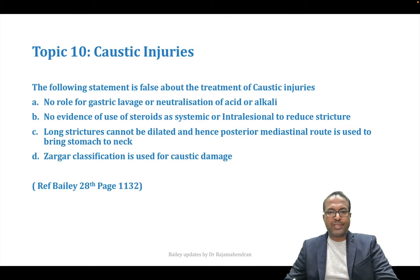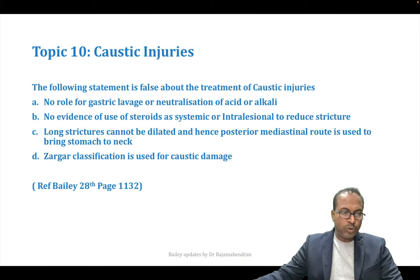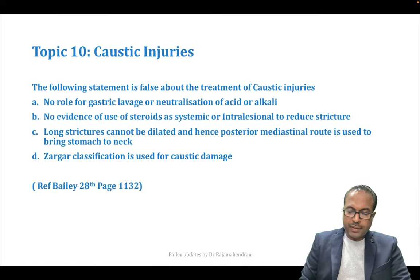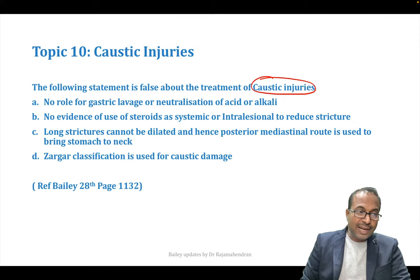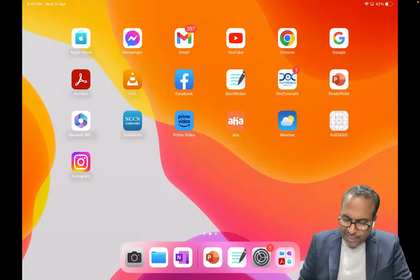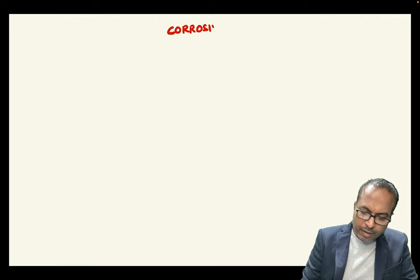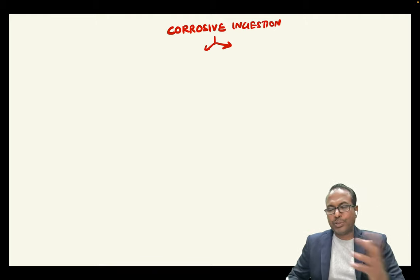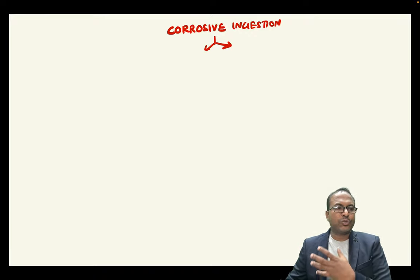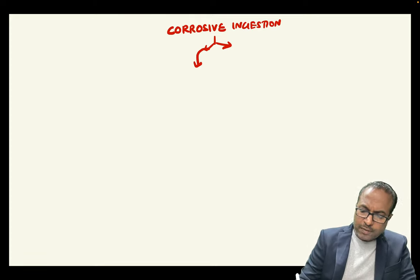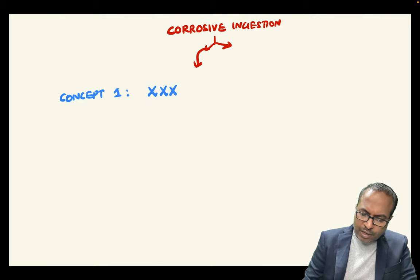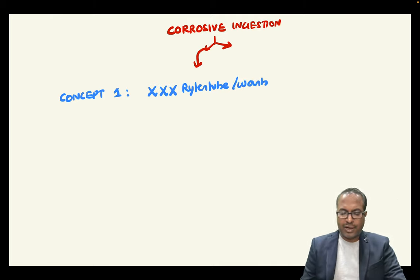A small update from caustic injuries — always a favorite topic for INISET examiners. Caustic ingestion can be alkali or acid. Alkali causes liquefactive necrosis; acid causes coagulative necrosis. Concept 1: never insert a Ryle's tube or perform gastric lavage — it is contraindicated, like in kerosene poisoning, because the corrosive will come back and cause more damage.